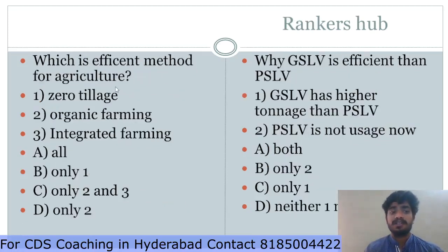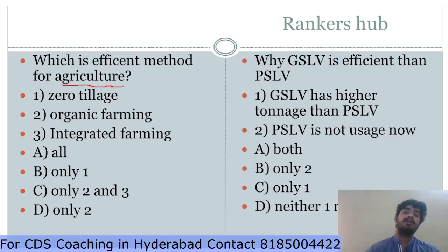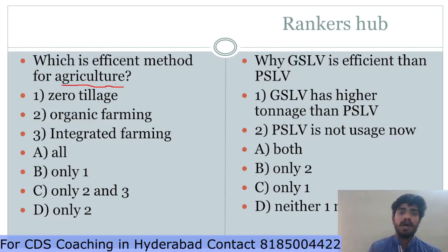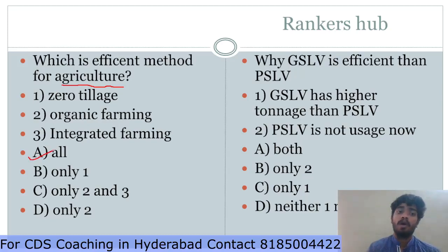Which is the most efficient method for agriculture? This is a very important question. All over the world, climate-induced agricultural crisis is a growing concern — shortage of water, rising sea levels, and the IPCC report indicates the next 50 years will be critical if sustainable methods are not adopted. The major methods are zero tillage, organic farming, and integrated farming. Zero tillage does not disturb the soil and retains soil moisture; organic farming uses zero chemicals; integrated farming is a mixture of crops, cattle, and vegetables. So the answer is all of the above.